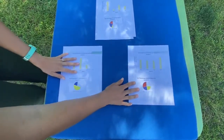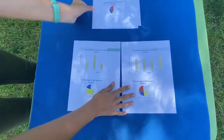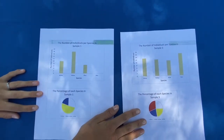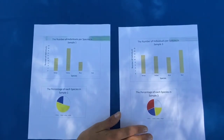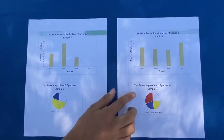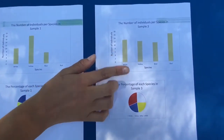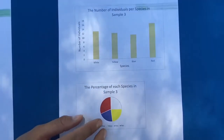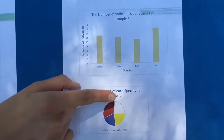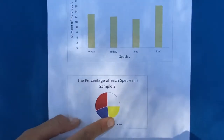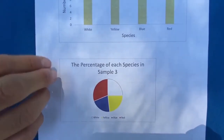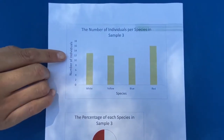For now I just want to talk about these two samples. We have sample 1 and sample 3, from two separate communities: community 1 and community 3. In community 3, from the bar graph and the pie chart, it's quite consistent — the numbers between the different species: the white, the red, the blue, and the yellow species all have similar percentages and similar numbers of individuals.